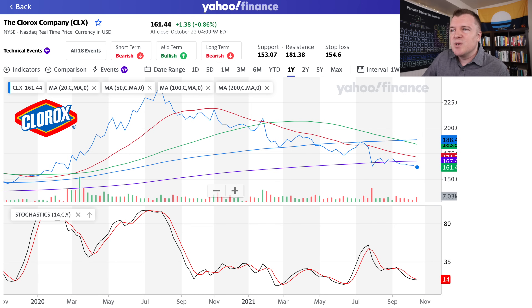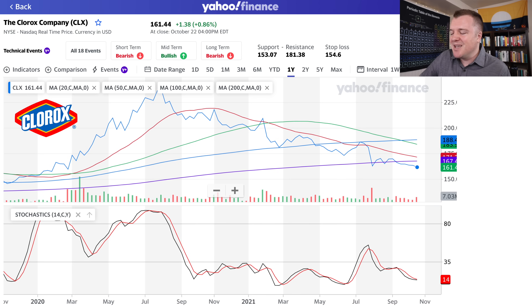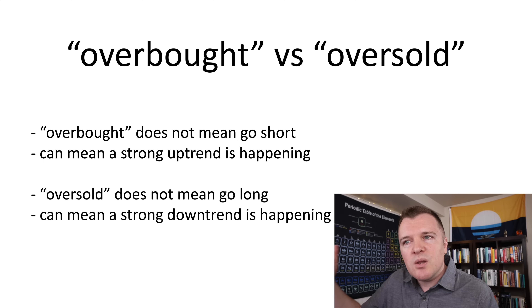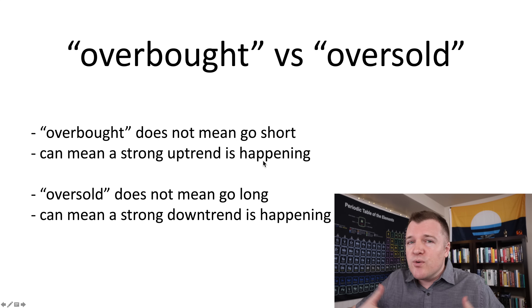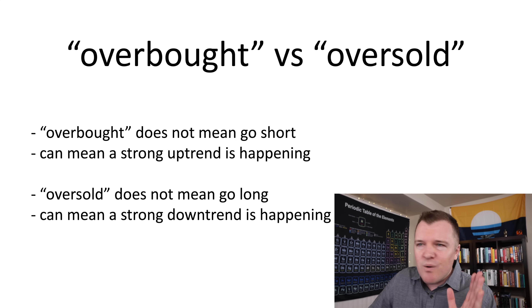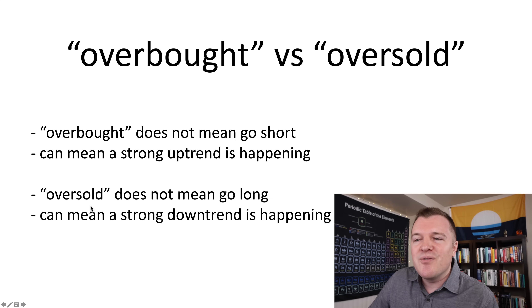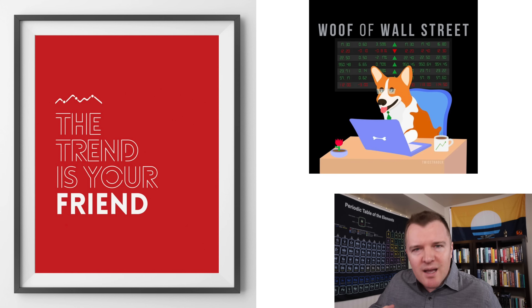The opposite is true when stocks are in a downtrend. Clorox has been in the oversold range, according to the stochastics on a one-week interval, for over a year since September of 2020. If you saw it was oversold there, should you have been buying Clorox? No — it would have been a bad move. So overbought can mean there's a strong uptrend happening for a very good reason — it's deservedly so. Overbought doesn't mean go short; oversold can just indicate there's a strong downtrend occurring. The trend is your friend. Don't fight the trend.